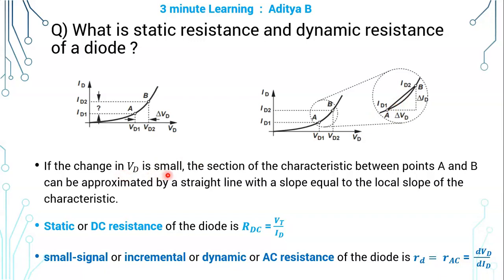If the change in VD is small, the section of the characteristic between points A and B can be approximated by a straight line with a slope equal to the local slope of the characteristic.